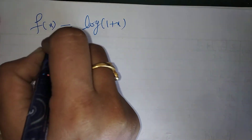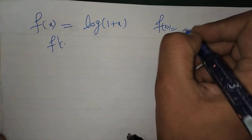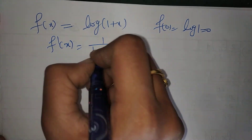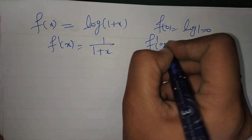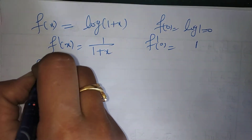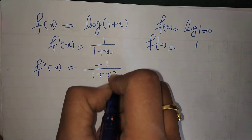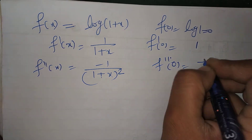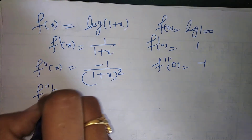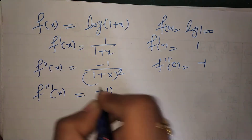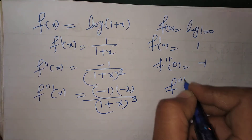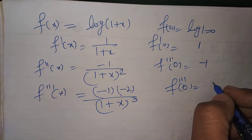f(x) = log(1+x). So f(0) = log 1 = 0. f'(x) = 1/(1+x), so f'(0) = 1. f''(x) = -1/(1+x)², so f''(0) = -1. f'''(x) = (-1)(-2)/(1+x)³, so f'''(0) = 2. The fourth derivative at 0: it is (-1)(-2)(-3)/(1+x)⁴ evaluated at 0, which gives -6.